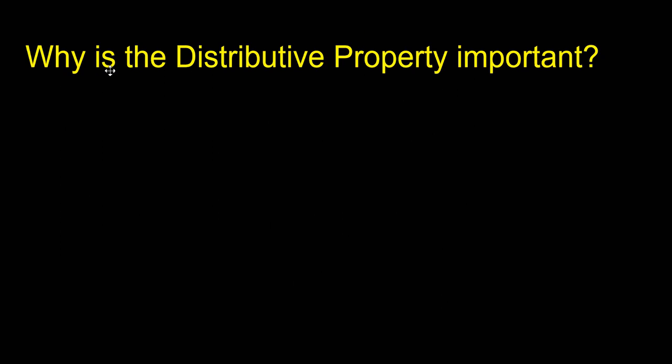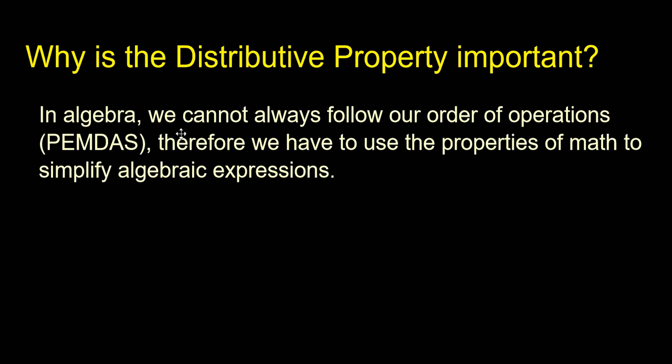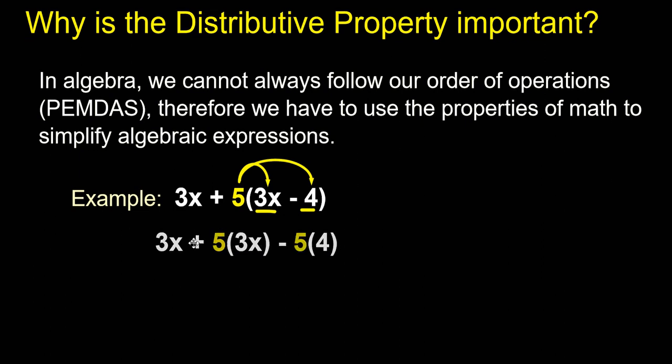Why is the distributive property important? Well in algebra, we cannot always follow our order of operations PEMDAS. Therefore we have to use the properties of math to simplify algebraic expressions. Notice here in the parentheses we have 3x minus 4. Well PEMDAS says do parentheses first, but in this case these are not like terms. If you don't know what like terms are you might check out my other video over combining like terms. Since we cannot combine these we have to use the distributive property to help simplify this expression.